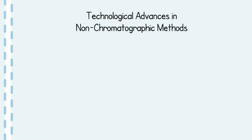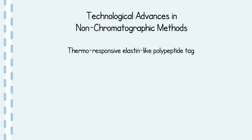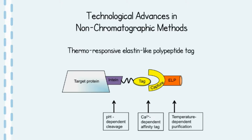In this review we also look at many technological advances in non-chromatographic based methods, an example of which is the use of thermoresponsive elastin-like polypeptide tags. The ELP tag essentially incorporates three different tools for purification: a pH-dependent intein cleavage site, a calcium-dependent affinity binding tag, and provides temperature-dependent purification by ELP aggregation.